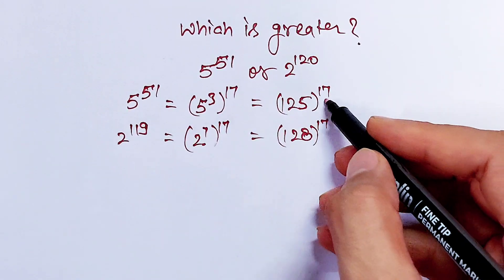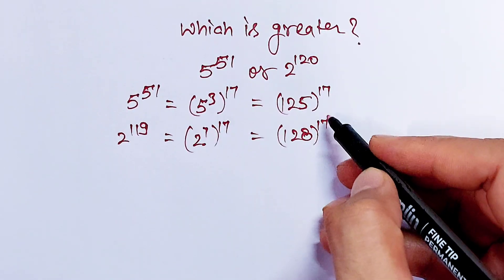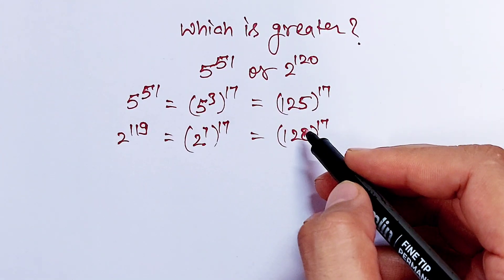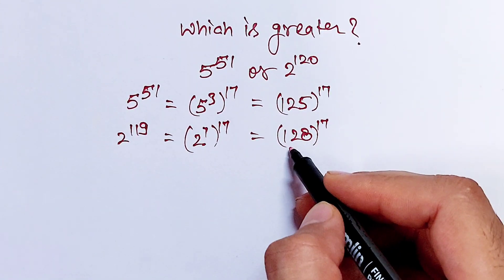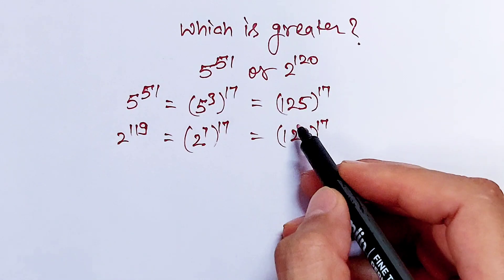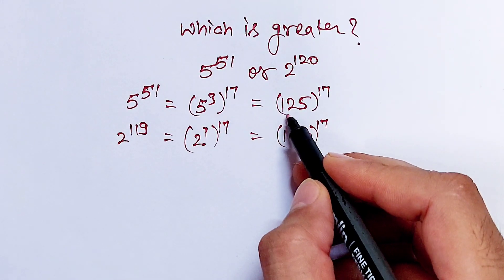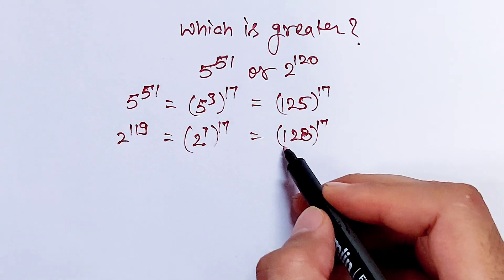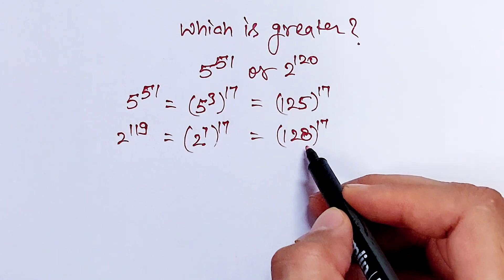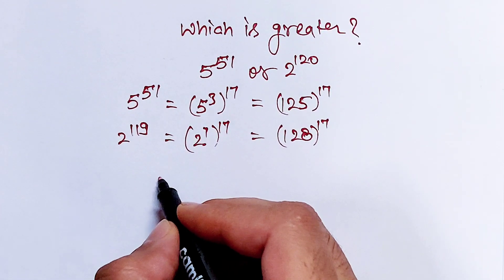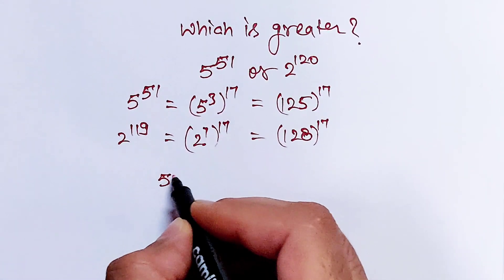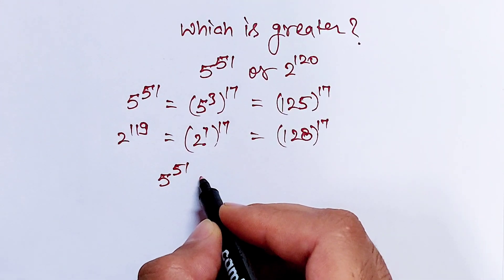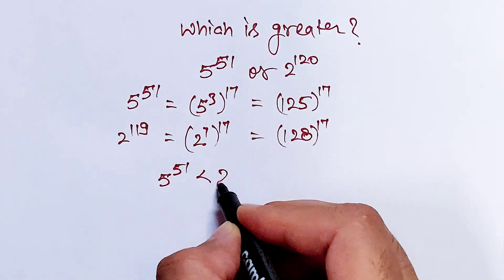Comparing both these numbers, the powers are the same, so whichever number is greater in base value, that number is greater. Here, 125 is smaller than 128, so that number is greater. Therefore, 5 power 51 is smaller than 2 power 119.